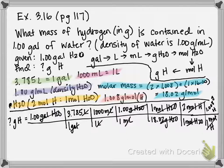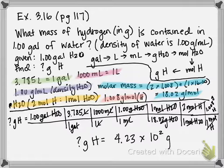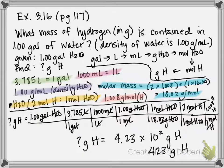So now I take all the numbers on the top: 1 times 3.785 times 1000 times 1 times 1 times 2 times 1.008. And then that divided by all ones on the bottom and 18.02. And your final answer should be 4.23 times 10 to the second grams of hydrogen, or another way of writing it, 423 grams of hydrogen. And that is your final answer. So that's how you use density and formula and molar mass all in one long problem.